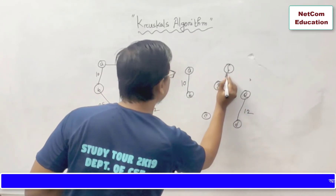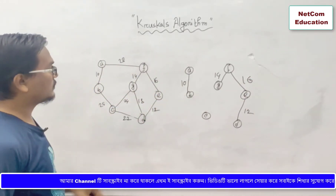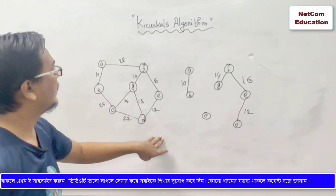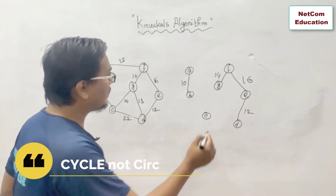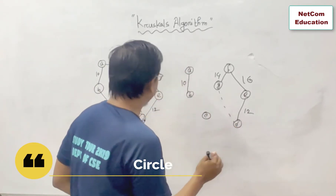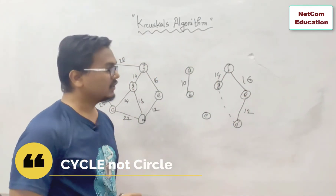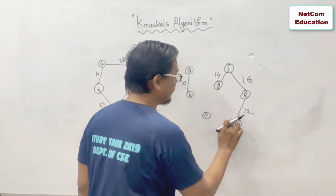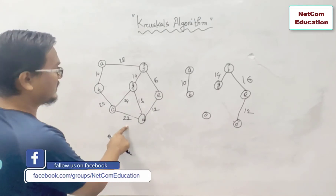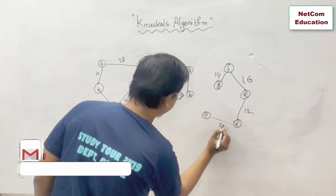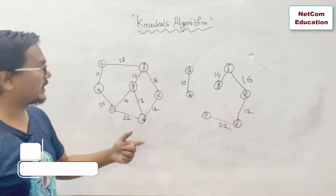তারপরে হচ্ছে চোদ্দ, নিচে তার তুমি এমন দেখা যাবে একটা সার্কেল হবে। আমি G D নই, কারণ শোলার পরে সপ্তে ছোটো হতো, এজ কুন্টা হে আঠার পরে সপ্তে ছোটো এজ হচ্ছে বাইশ। সো আমরা C D নই, তারপরে ছোটো হতো। সো আমরা C G নই।